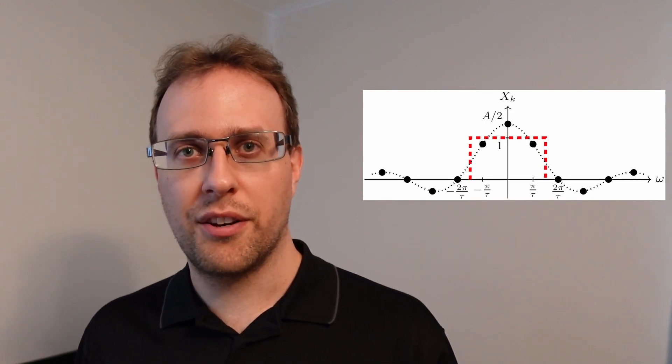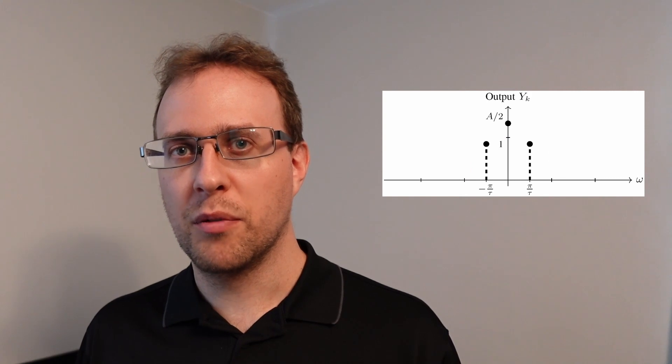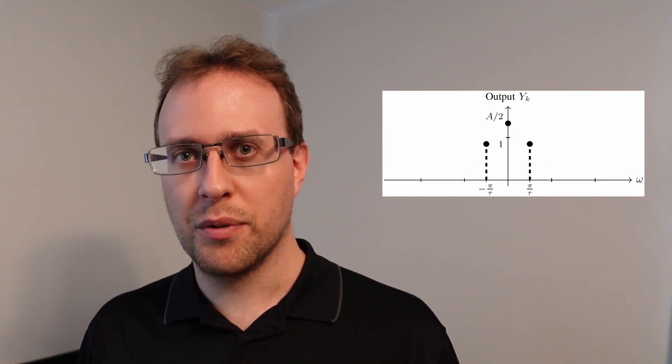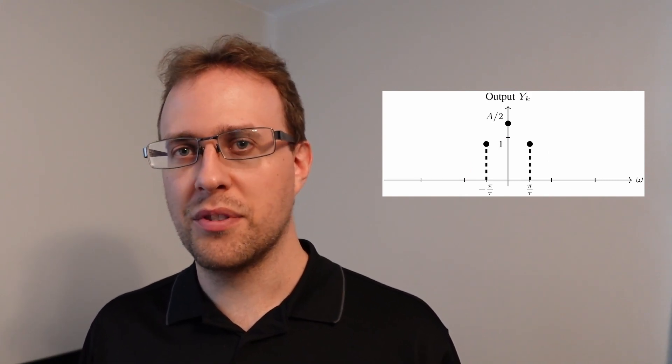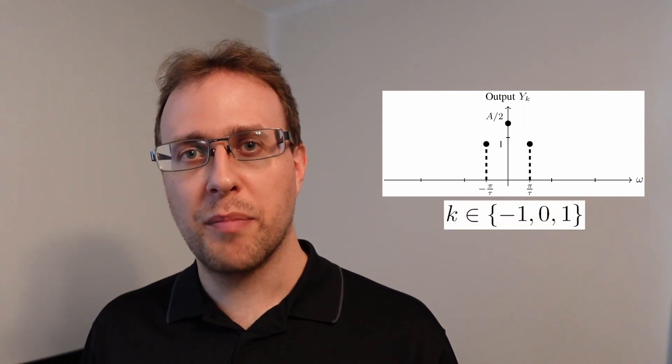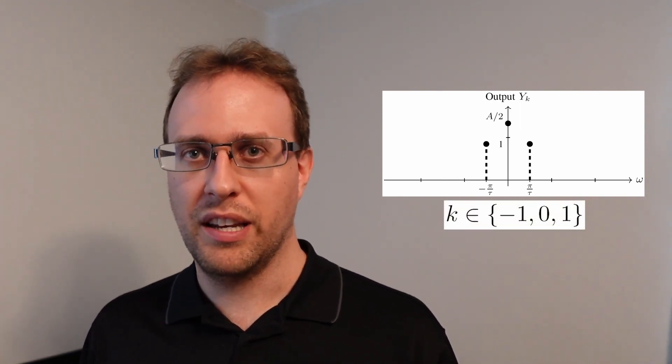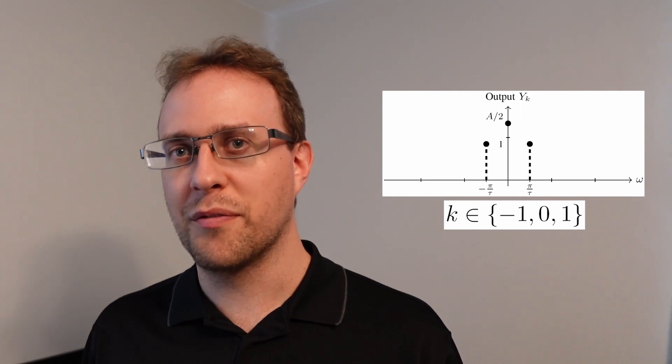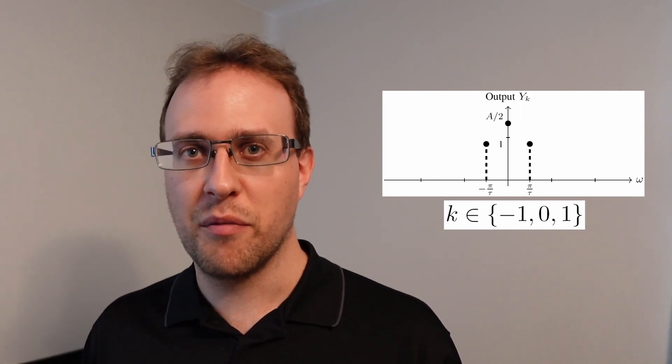After passing through this ideal filter, the only components that will remain will be the ones that are at 0, frequency pi over tau, and frequency negative pi over tau. These correspond to the spectral indices of 0, positive 1, and negative 1. So those are the only values of k of the Fourier series that remain at the output.